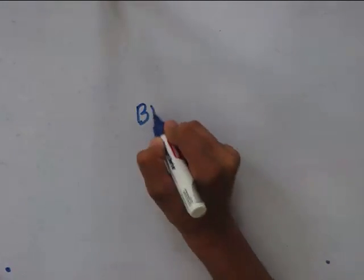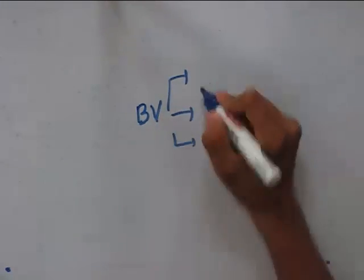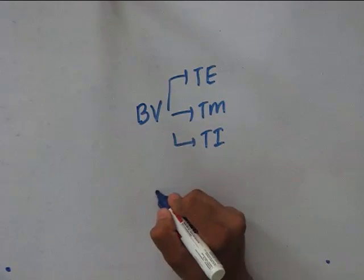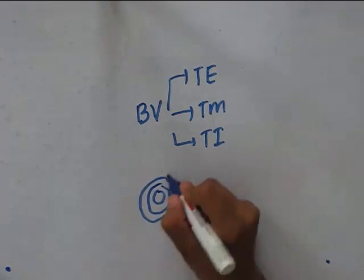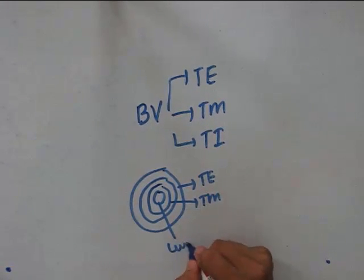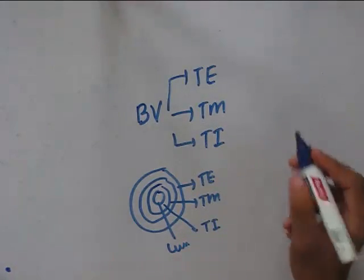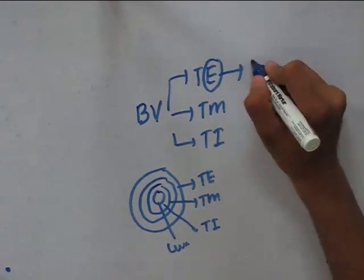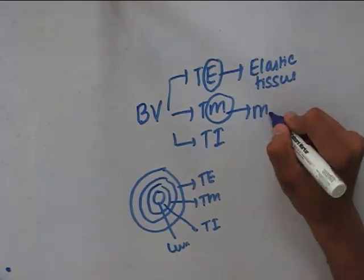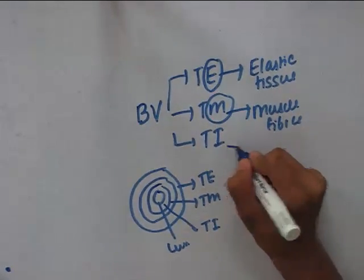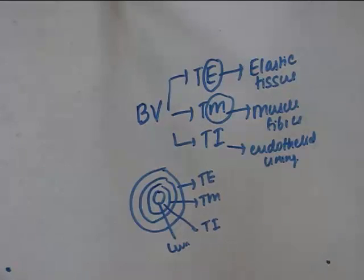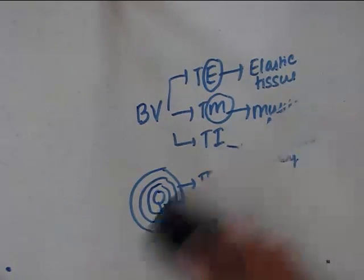Now let's study about the functional organization of blood vessels. Blood vessels are normally divided into three layers: tunica externa, tunica media, and tunica interna. If we consider this as the lumen of the blood vessel and these are the three layers — tunica externa contains elastic tissues, tunica media contains muscle fibers, and tunica interna consists of an endothelial lining.